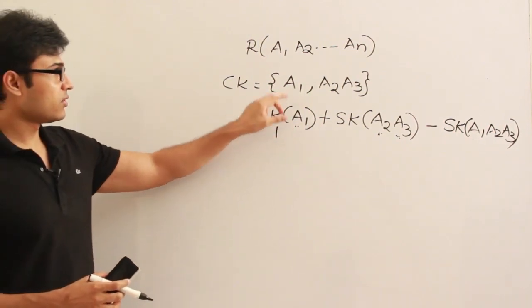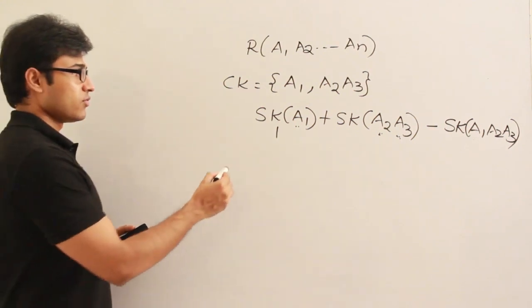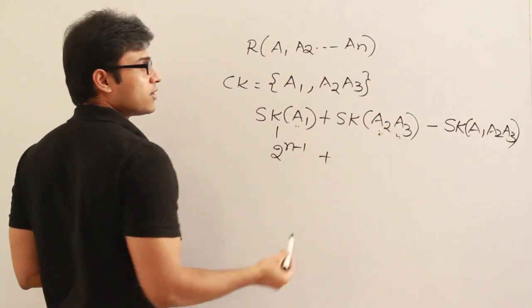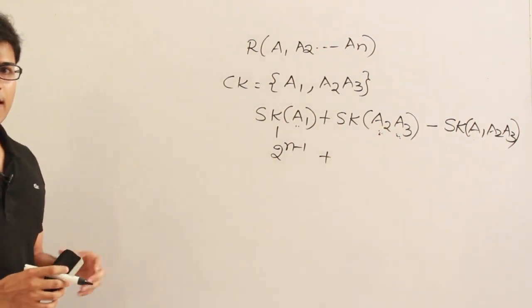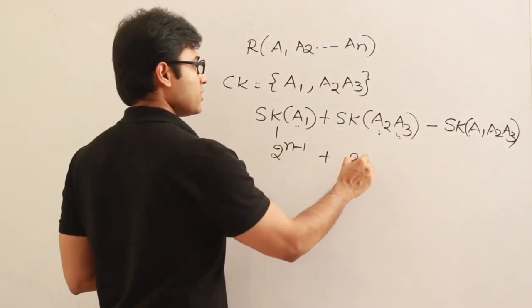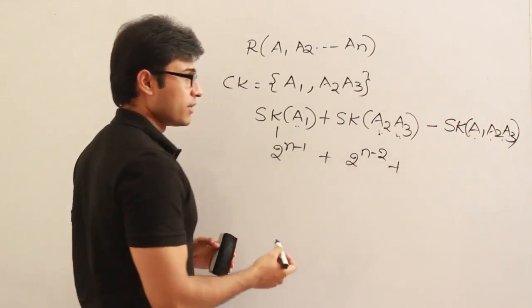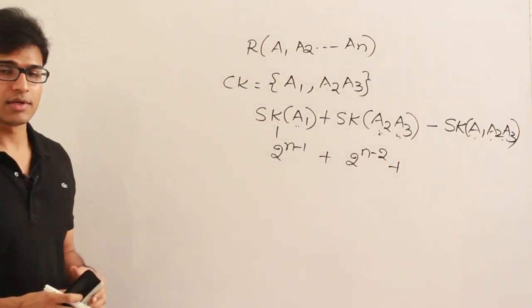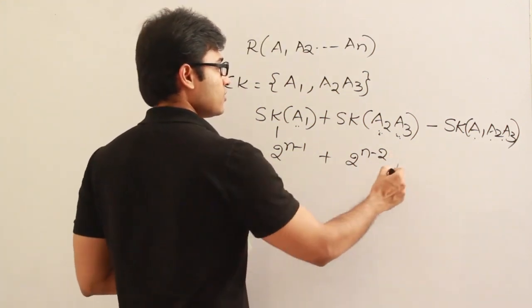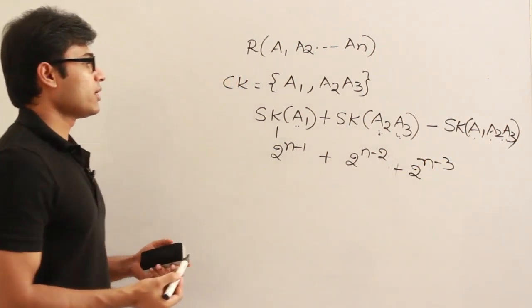How many super keys contain a1? Remove a1, leaving n−1 attributes, so the count is 2^(n−1). For {a2, a3} definitely present, n−2 attributes remain, giving 2^(n−2). For {a1, a2, a3} all present, n−3 remain, giving 2^(n−3). So the total is 2^(n−1) + 2^(n−2) − 2^(n−3). That is the answer.